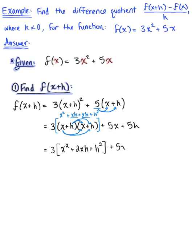Don't forget, we still have that plus 5x plus 5h on the outside. So our last step here is to distribute our 3 through to each term in this trinomial. So we have 3x squared plus 3 times 2 gives us 6xh plus 3h squared plus 5x plus 5h.